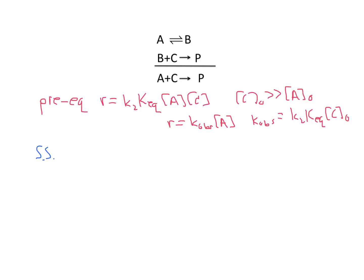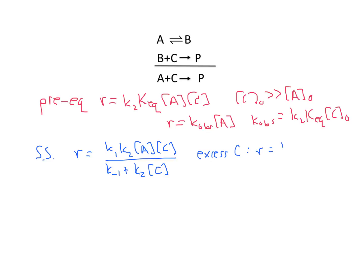In the case of the steady-state approximation, I have a more complicated dependence, and the rate of reaction was equal to K1 times K2 times A times C divided by K minus 1 plus K2 times C. And when I use excess C, I find that the rate is equal to K observed times A — again, first order in A — but my K observed value depends on C in a much more complicated fashion.